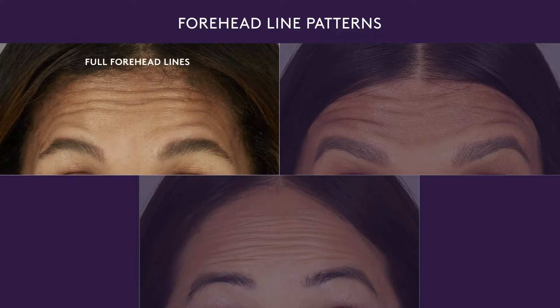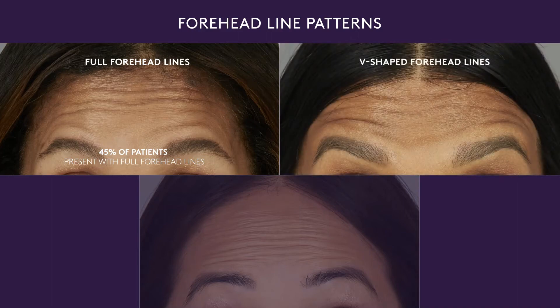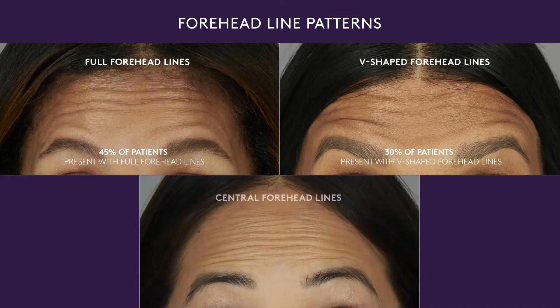Variations in dynamic line patterns emphasize the importance of individualizing treatment. There are three commonly encountered forehead line patterns. Patients may have full forehead lines, which present as straight lines across the forehead — 45% of patients present with this pattern. The second most common is V-shaped forehead lines, wing-shaped lines on the forehead, in 30% of patients. Central forehead lines, presenting as a column of short lines in the middle of the forehead, occur in 10% of individuals. The illustration highlights these variations, with full forehead lines on top and central forehead lines on bottom.